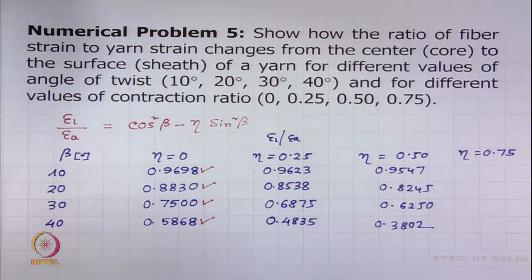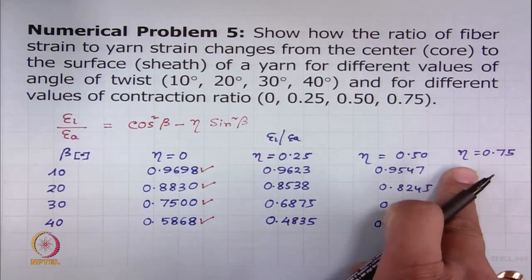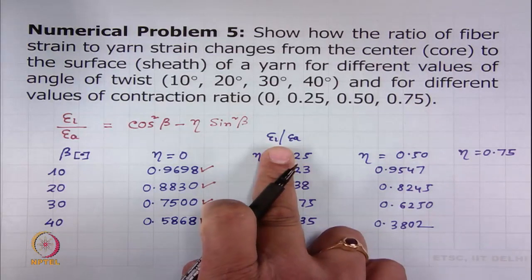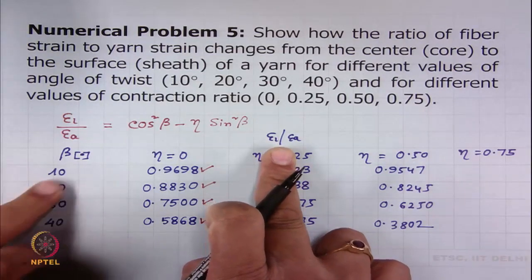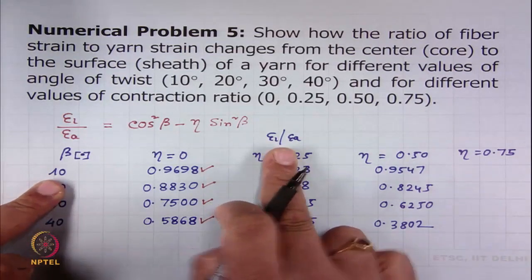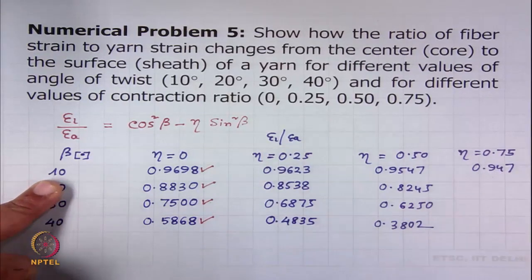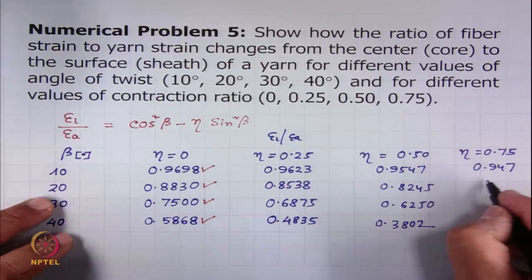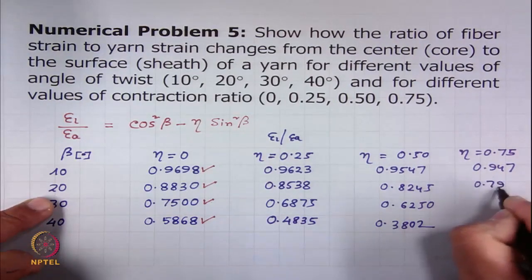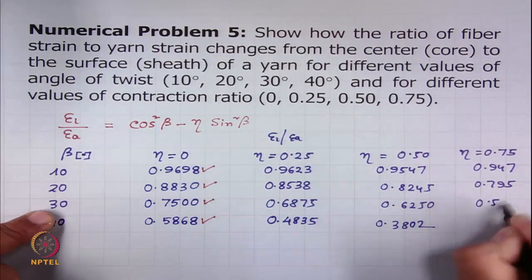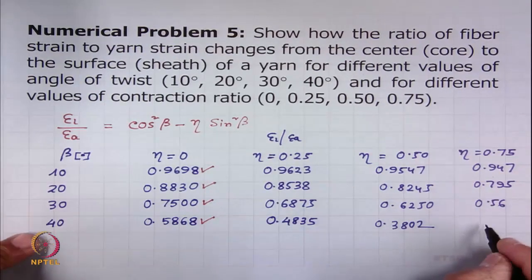In a similar manner we can solve when contraction ratio is 0.75. The ratio of fibre strain to yarn strain when beta is equal to 10 degrees will be 0.947. For 20 degrees this value will be 0.795. For 30 degrees this value will be 0.56 and for 40 degrees this value will be approximately 0.27.